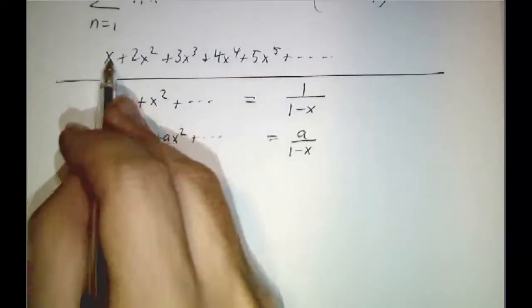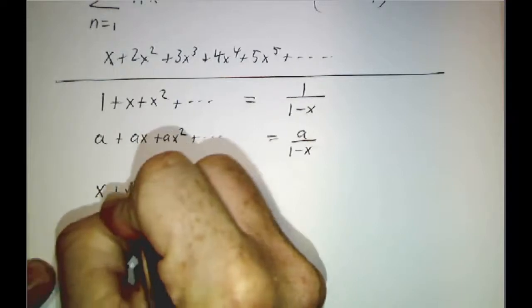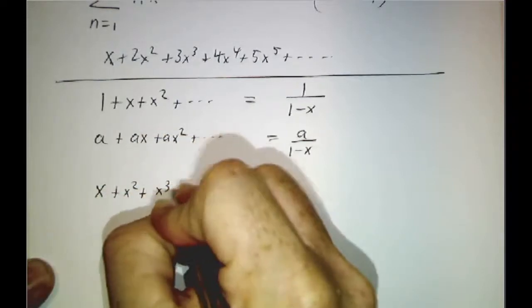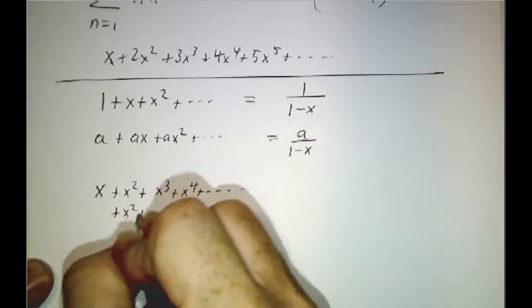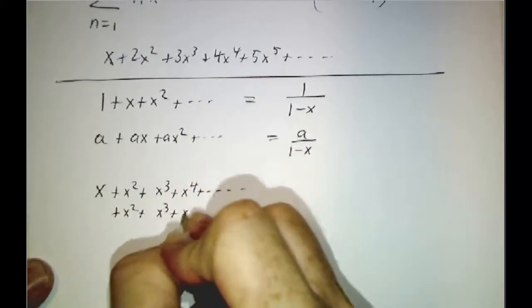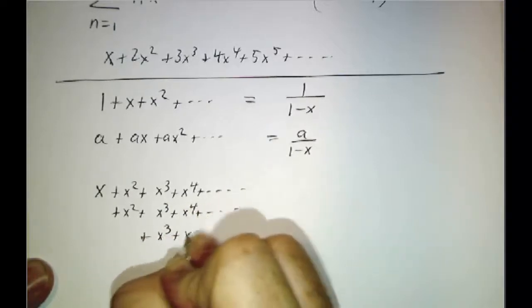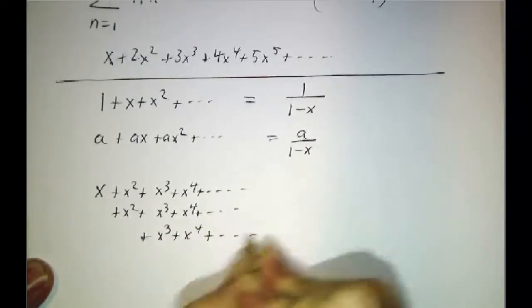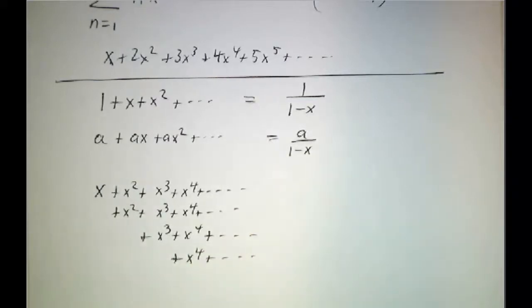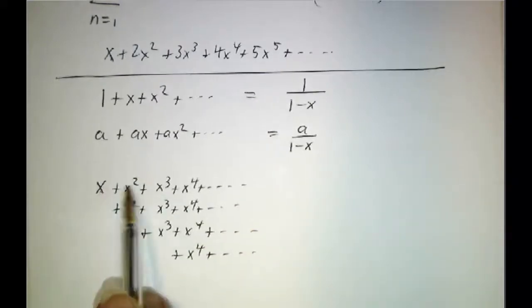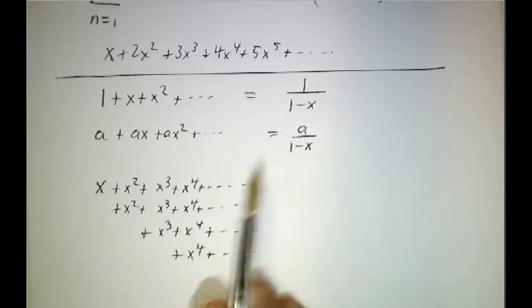So we take our original series and I'm going to write it in a funny way. I'm going to write it as x plus x squared plus x cubed plus x to the fourth and so on, plus x squared plus x cubed plus x to the fourth and so on, plus x cubed plus x to the fourth and so on, plus x to the fourth and so on. So you notice we count x once and x squared twice and x cubed three times and x to the fourth four times and that's what we wanted.